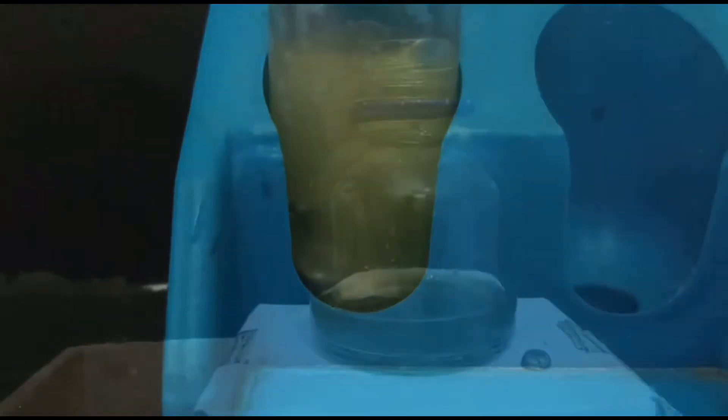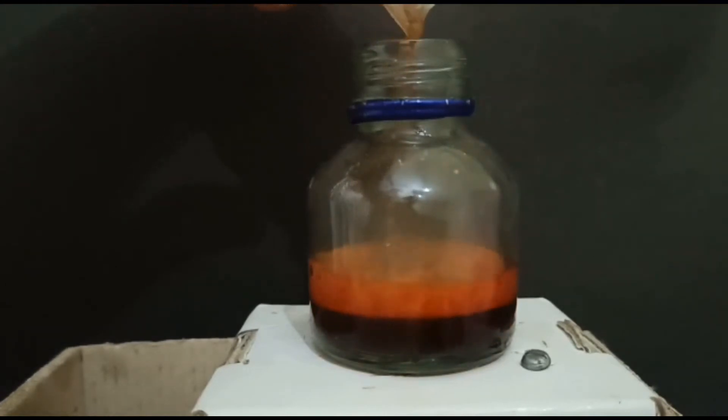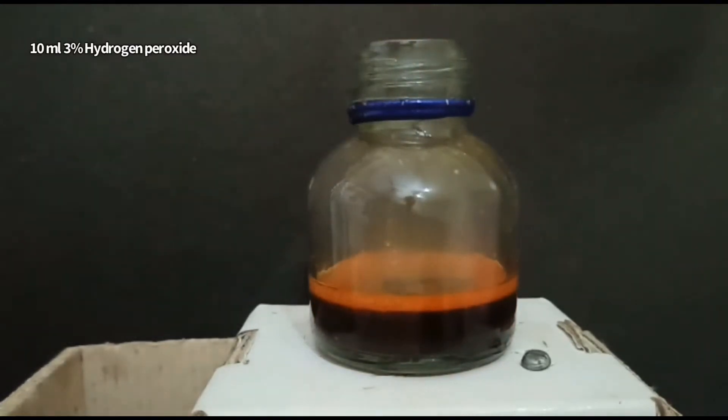About a week later, all the iron had dissolved, so I filtered the solution and transferred it to another container. Then I added 10 ml of 3% hydrogen peroxide. The hydrogen peroxide must be added slowly because this reaction is exothermic.